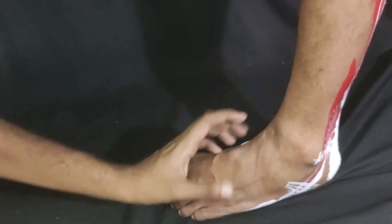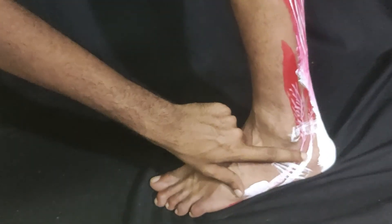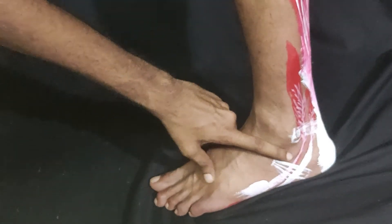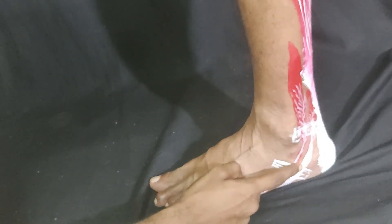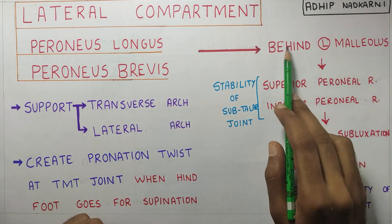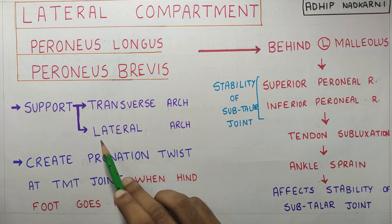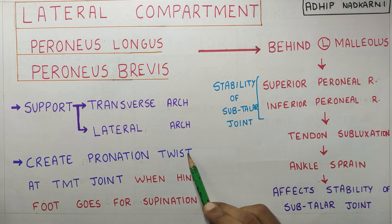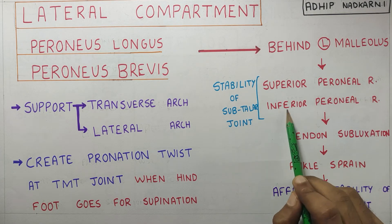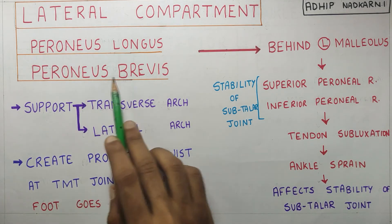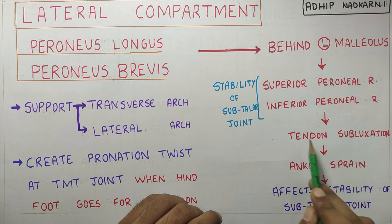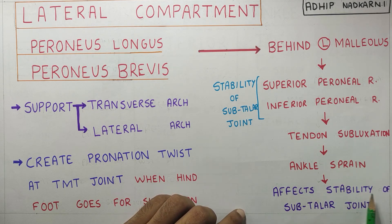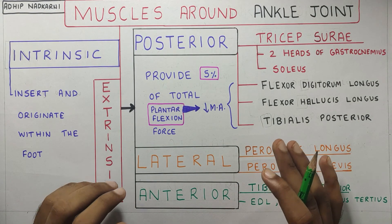When the ankle joint goes for a lateral sprain, the peroneus longus and brevis can get injured. These muscles provide major stability to the subtalar joint. In a third-degree ankle sprain these muscles can get injured, compromising subtalar stability, and they can also get dislocated from their original position. Both muscles support the transverse and lateral arches of the foot, and together with the peroneal retinaculum they provide stability to the subtalar joint.